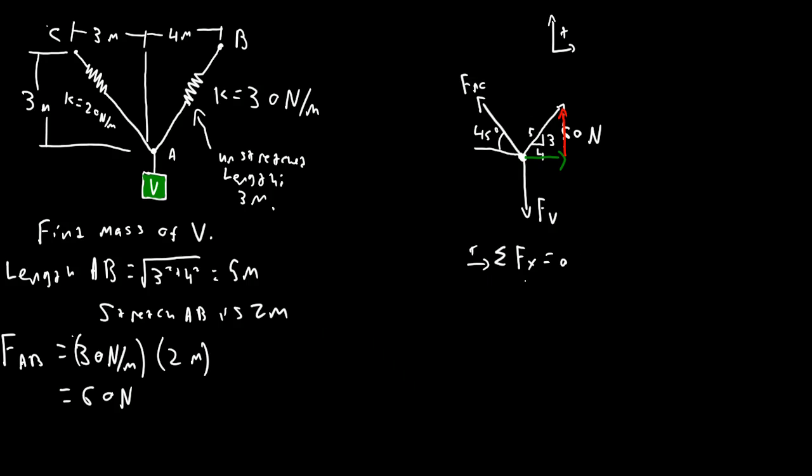So we get 60 newtons times cosine of this angle. Cosine is going to be adjacent over hypotenuse, 4 over 5. It is a right angle triangle. If these were not orthogonal to each other, then this wouldn't be a right angle triangle and we couldn't use that. But in this case it is, so we can.